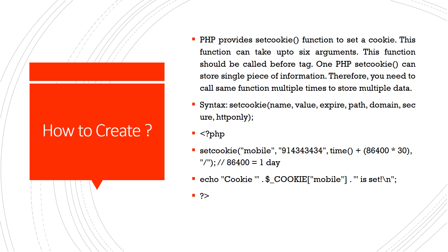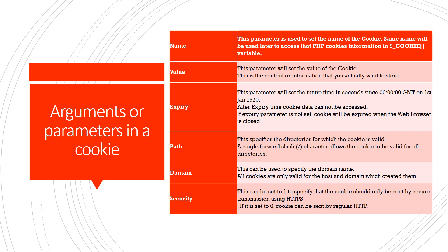The setcookie function has seven parameters. Name is used to specify the name of the cookie. Value is the content of the information. Expiry means the time taken from GMT — from the system time — indicating when the cookie expires. Path is given as slash normally. Domain can be used to specify the domain name, and all cookies are valid for the host and domain which created them. Secure, if set to one, means the cookie should be sent only by secure transmission HTTPS; if set to zero it is regular HTTP.